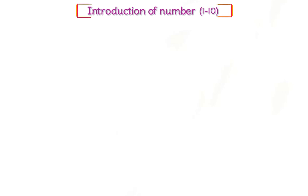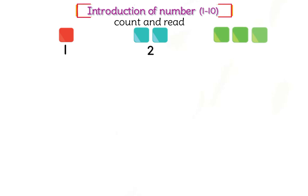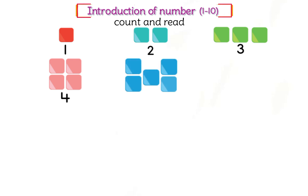Introduction of numbers 1 to 10. Count and read: one — one block. Two — two blocks. Three — three blocks. Four — four blocks. Five — five blocks. Six — six blocks.